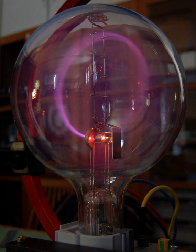Cathode rays are streams of electrons observed in vacuum tubes. If an evacuated glass tube is equipped with two electrodes and a voltage is applied, glass behind the positive electrode is observed to glow.